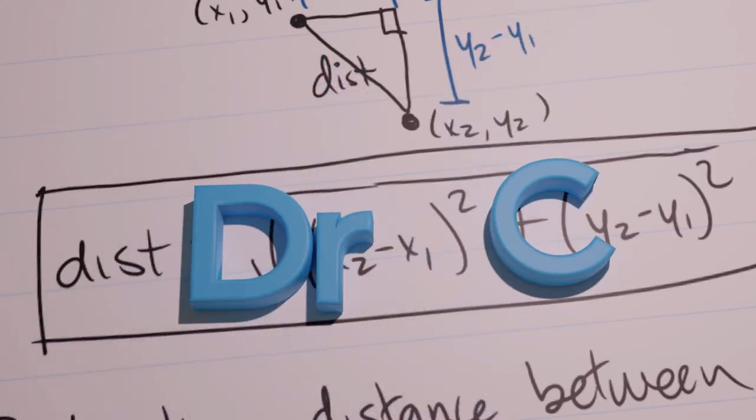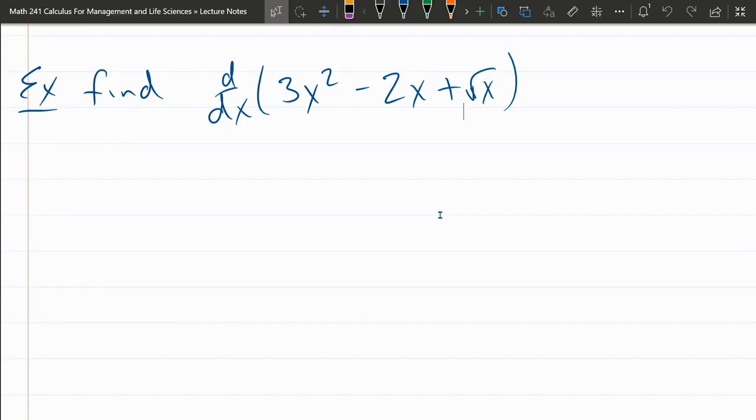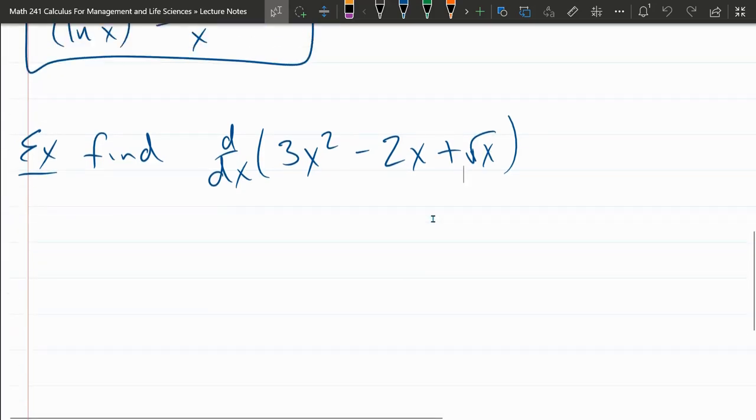In this example, we're ready to take our first derivative, at least first derivative using the formulas that we have. First thing I'm going to do is write it with a prime notation instead. Square root, I'm rewriting square root as a one half power. And this is prime right here.